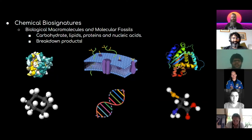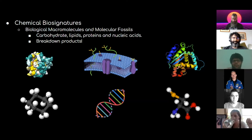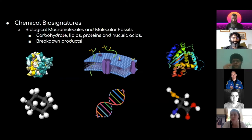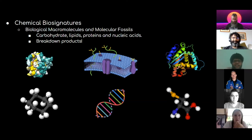Chemical biosignatures can be of many types. All living organisms we know have these building blocks of life: carbohydrates, lipids, proteins, and nucleic acids like DNA and RNA. If we find an abundance of these nucleic acids or building blocks, we can consider that a biosignature of active life. But in extreme environments they might break down, so we might find breakdown products — also known as molecular fossils — which are an interesting biosignature as well.